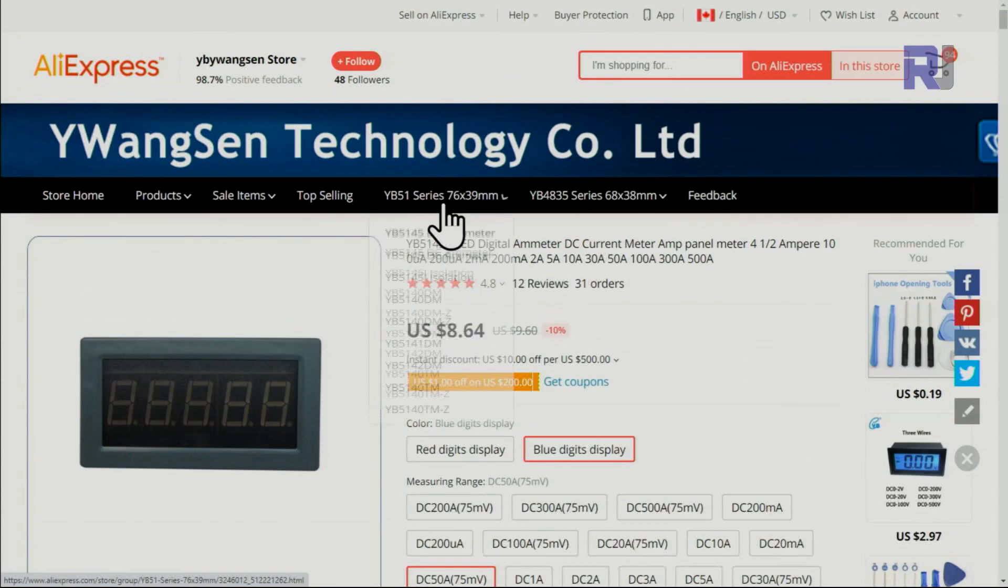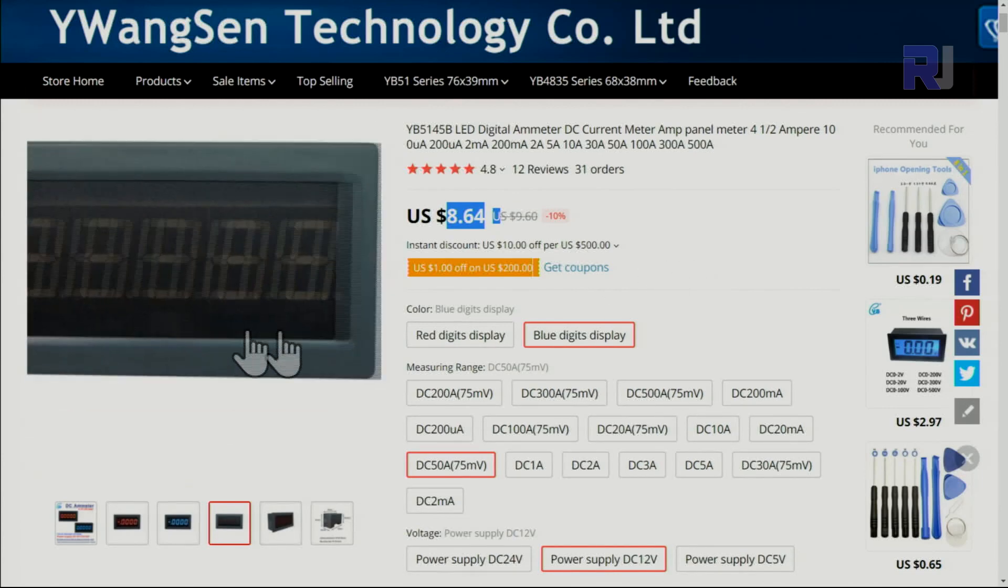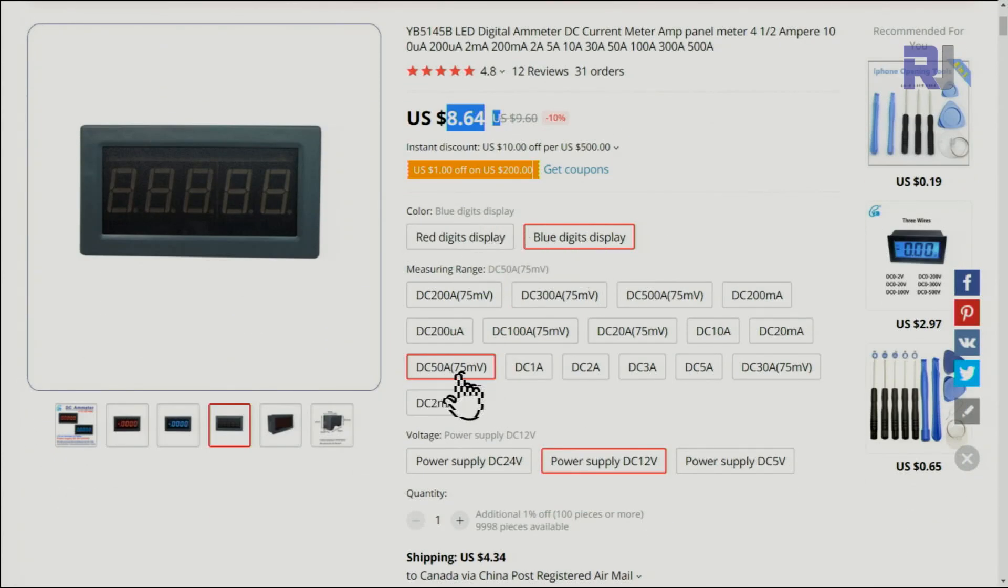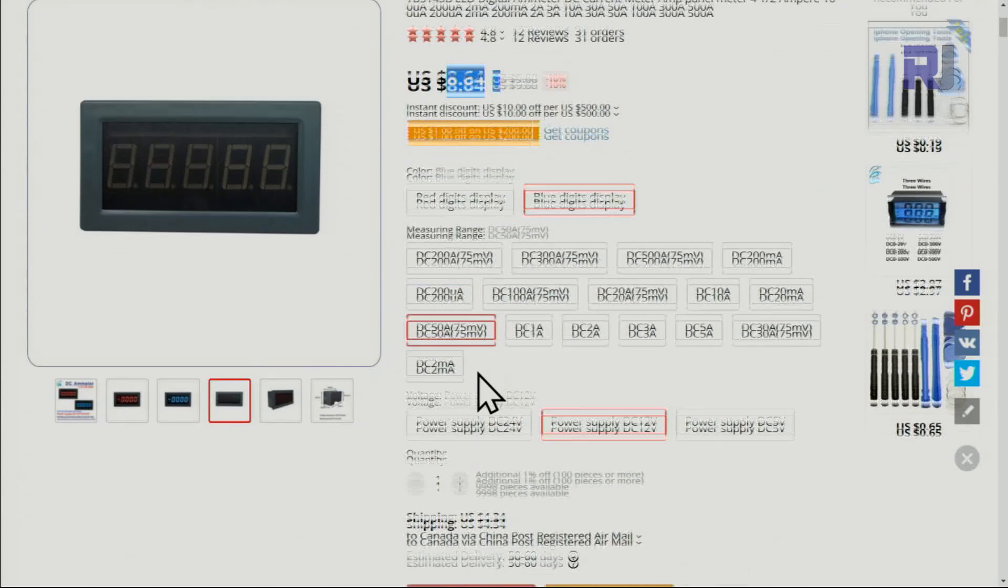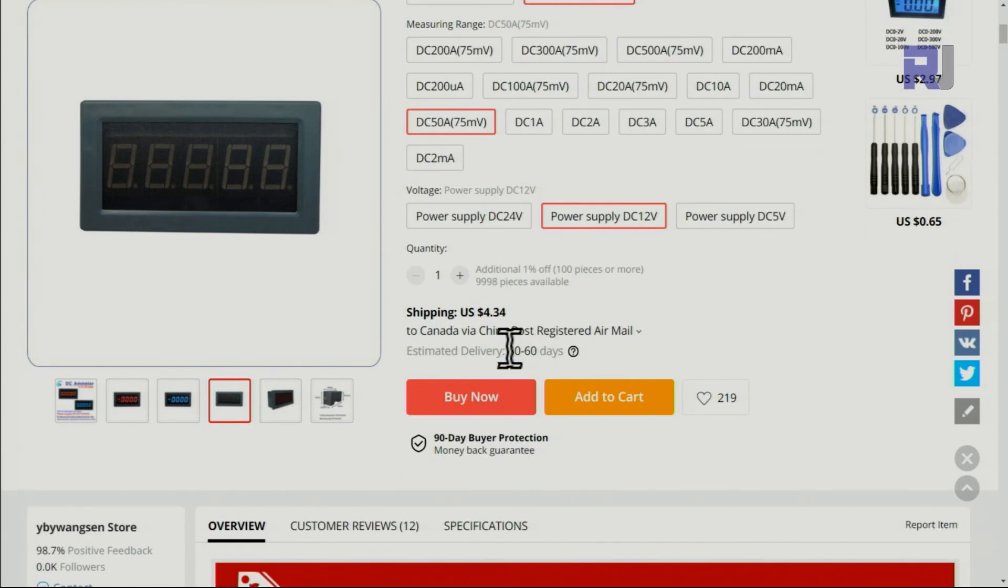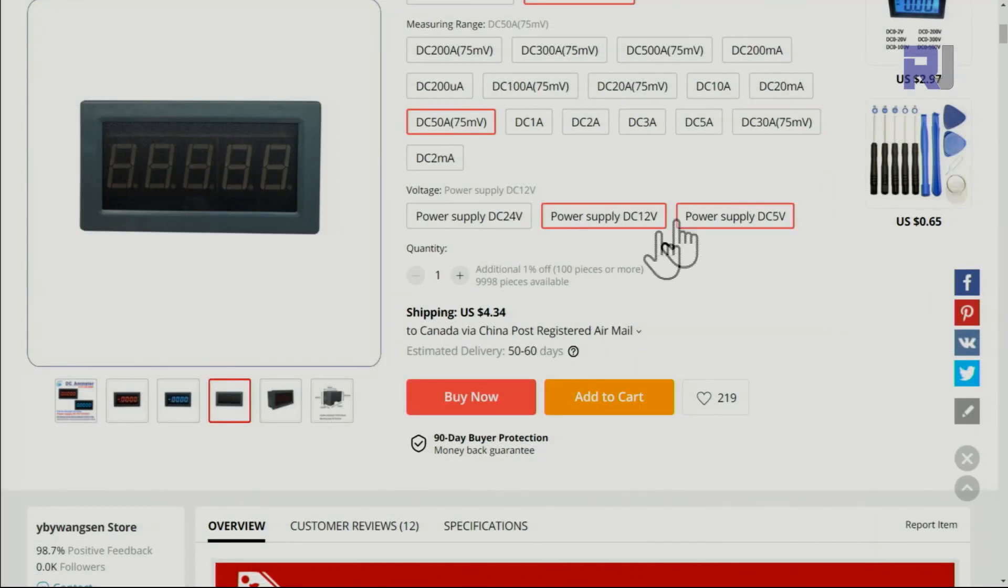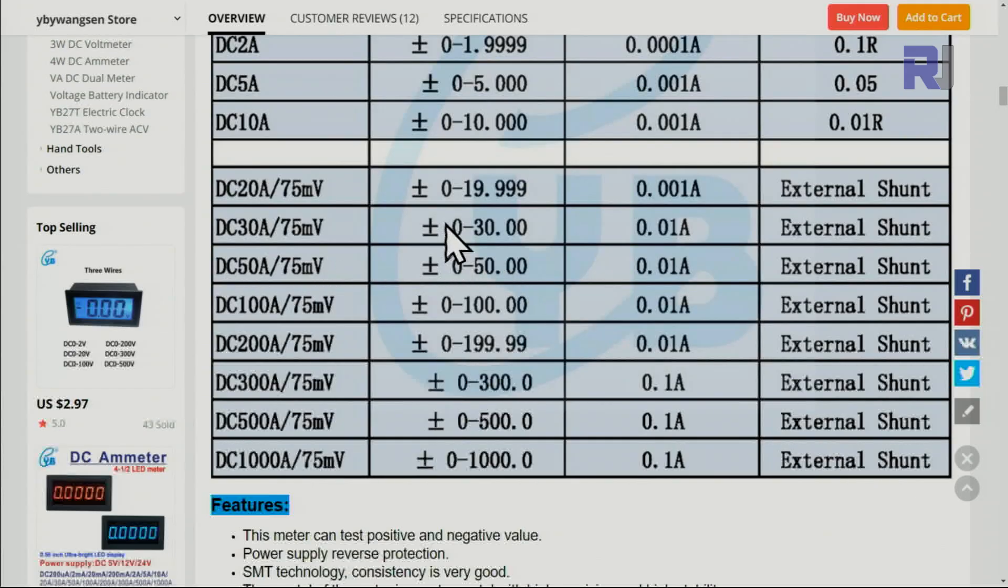I purchased it from YWANG Sun Technology store on Aliexpress. The price is $8.64 US. Here is a blue and red version, and I've selected 50 ampere 75 millivolts. They're selling it with 24 volt, 12 volt, or 5 volt versions. Shipping is 34 cents which will take 50 to 60 business days to receive it, but if you want it faster you have to pay a little higher.